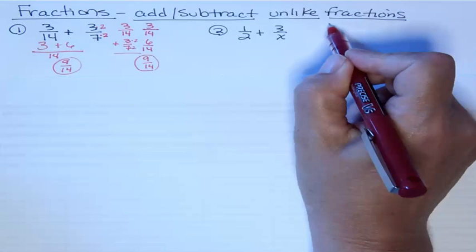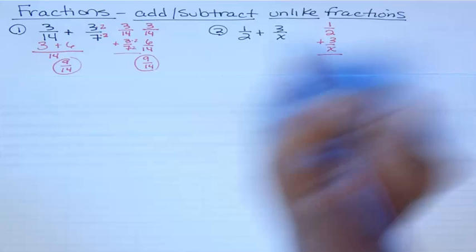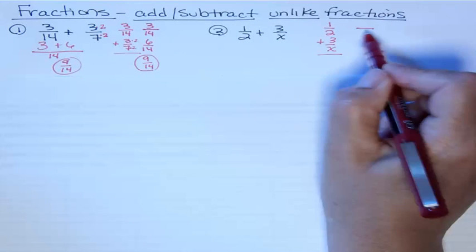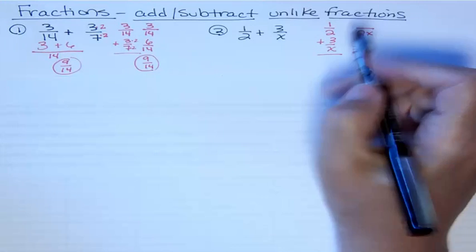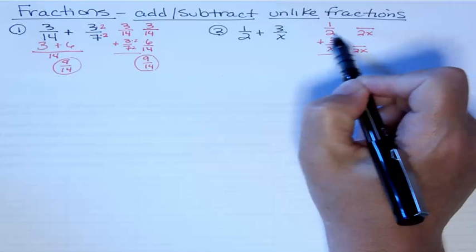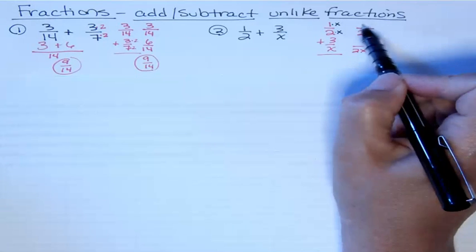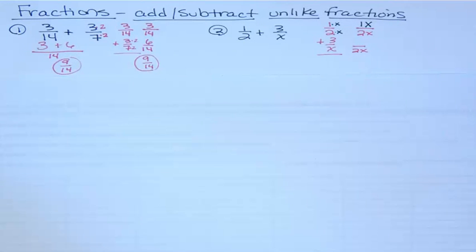Now I'm going to do the second one. I have 1/2 plus 3/x — this is a little trickier, because my second number is a variable and I don't really know what that is. So I can't do anything except put the two numbers together. So 2 and x is going to be my LCD — in other words, 2x. I go back and say, I didn't used to have 2x, I just had 2, so what do I multiply 2 by to get 2x? I have to multiply that by x, and so I have to do the same thing to the top. 1 times x is x — remember it's 1x.